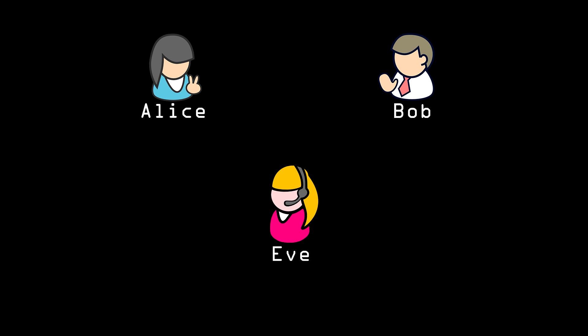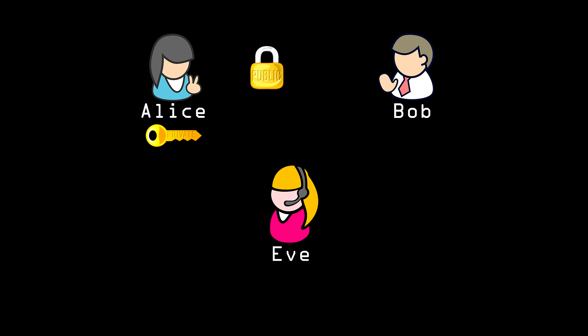One solution to this is to use asymmetric key or private key encryption. With this concept, Alice can generate an encryption key and keep it to herself. This is her private key, and no one else in the world needs to have it. From this private key, she generates a public key, which she sends to Bob.